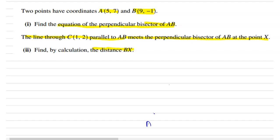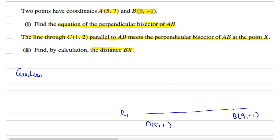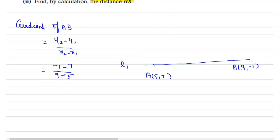Now mark the points A of (5, 7) and B of (9, −1). So this is the line — we can take it as line L1. First, we have to find the perpendicular bisector of AB. For that, first calculate the gradient of AB, which is equal to (y2 − y1) divided by (x2 − x1), which is equal to (−1 − 7) divided by (9 − 5).